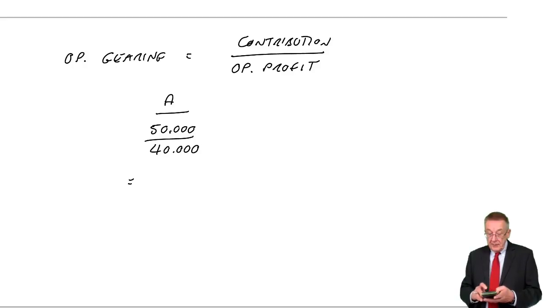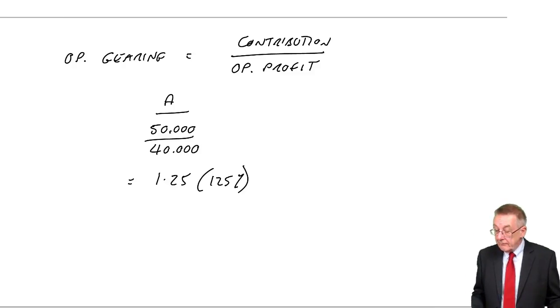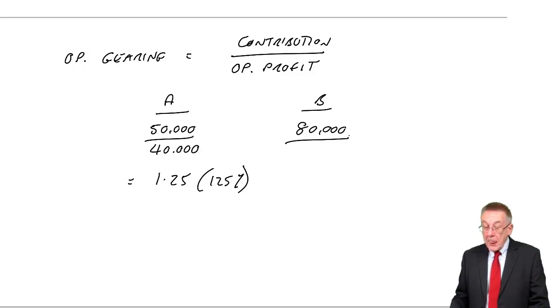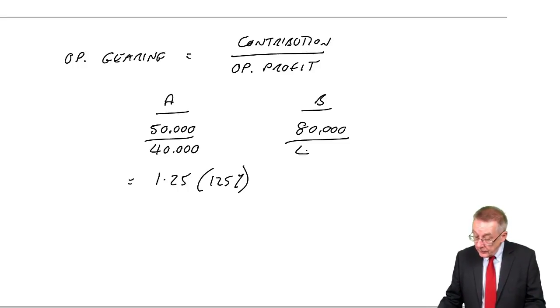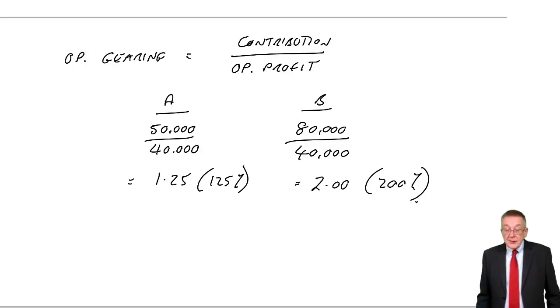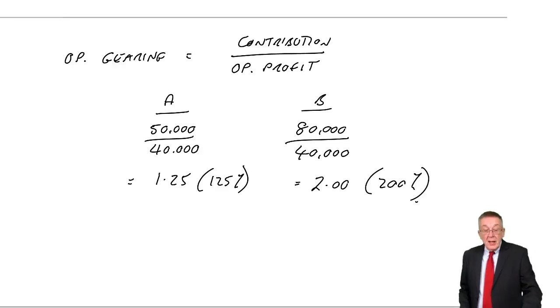So, 50 divided by 40 is 1.25 or 125%. Whereas, in the case of B, the contribution sales less the variable costs is 80,000. The operating profit is 40,000. And so, the ratio is 2 or 200%. So, the greater the operating gearing, the more risky things are. B is a more risky company. It's great if sales are growing. It's a problem if sales are falling.